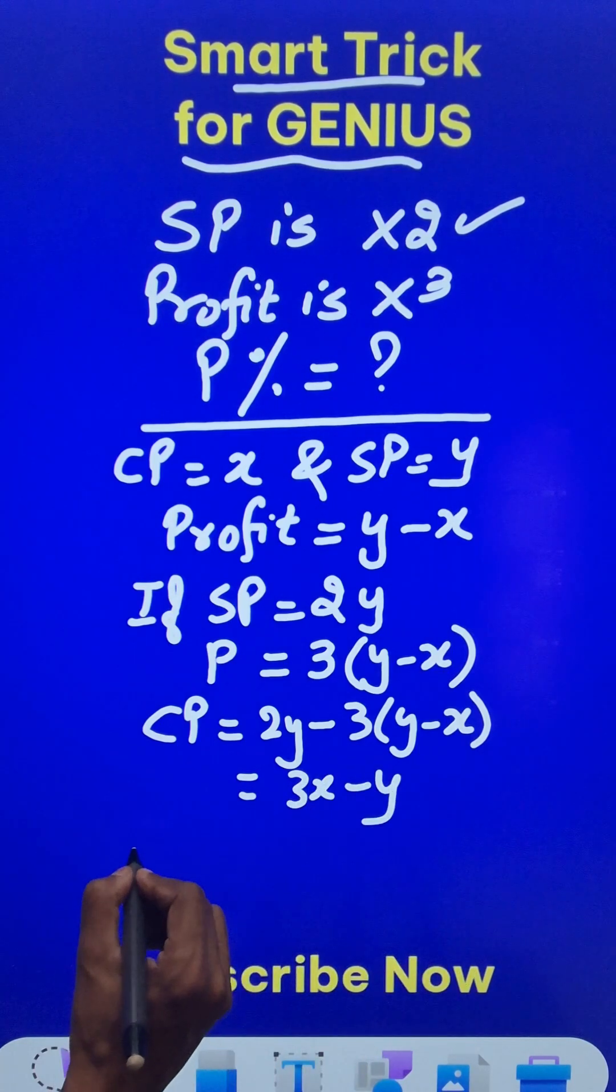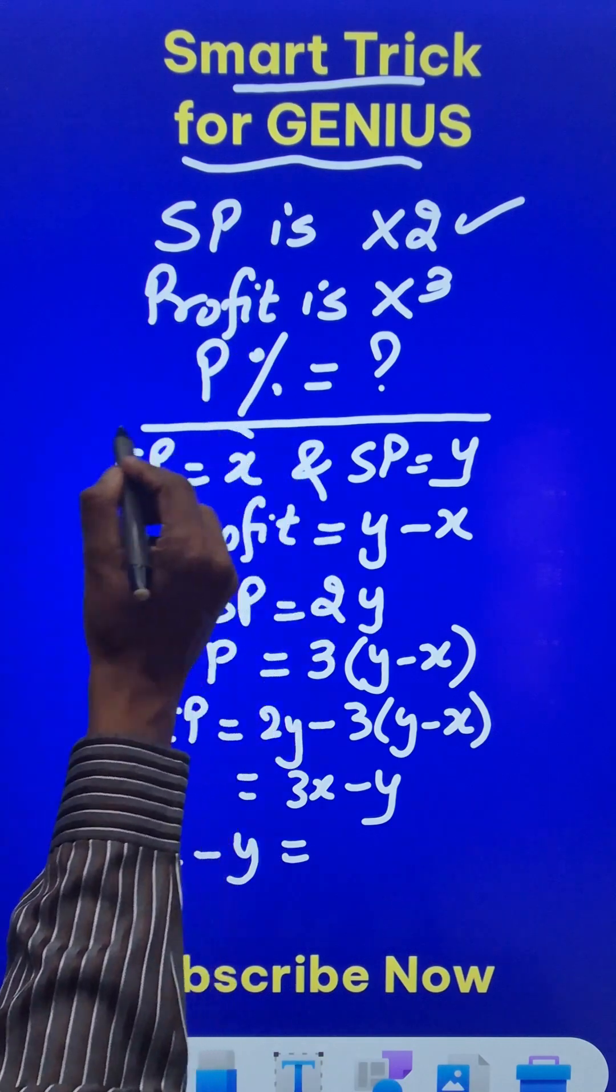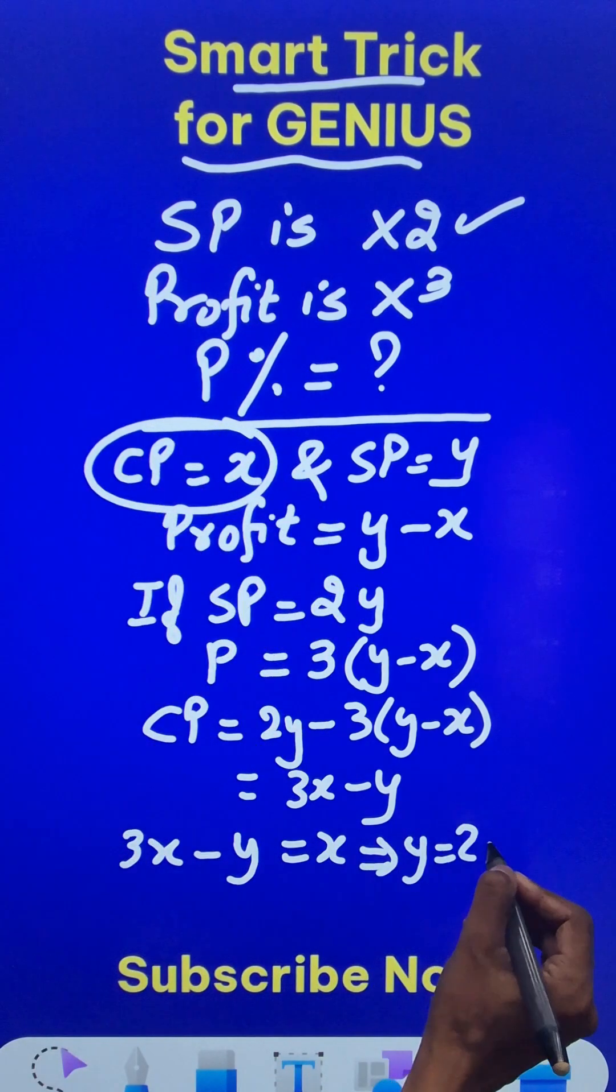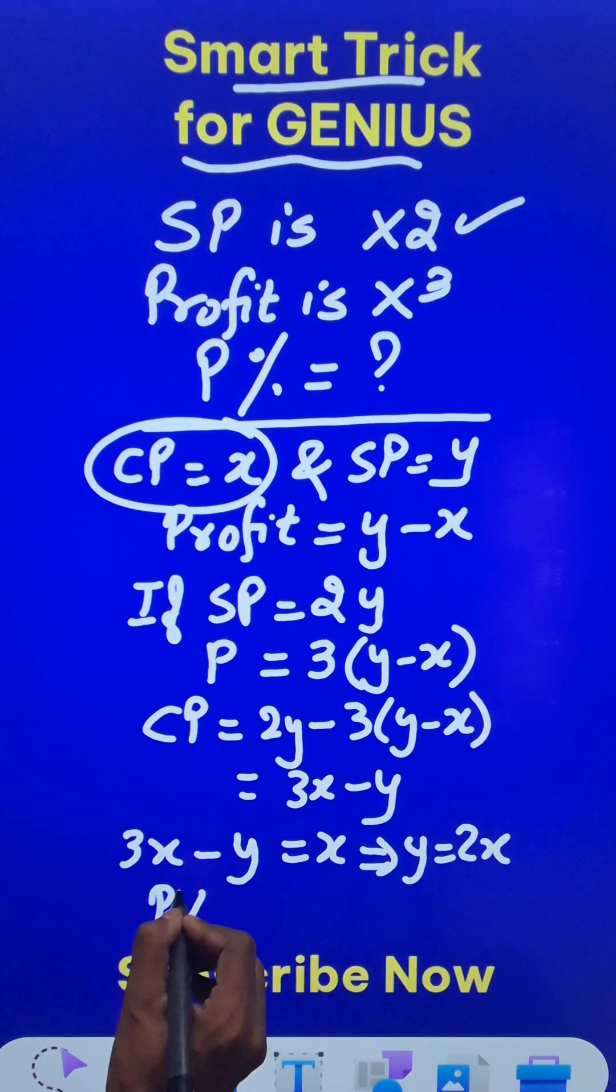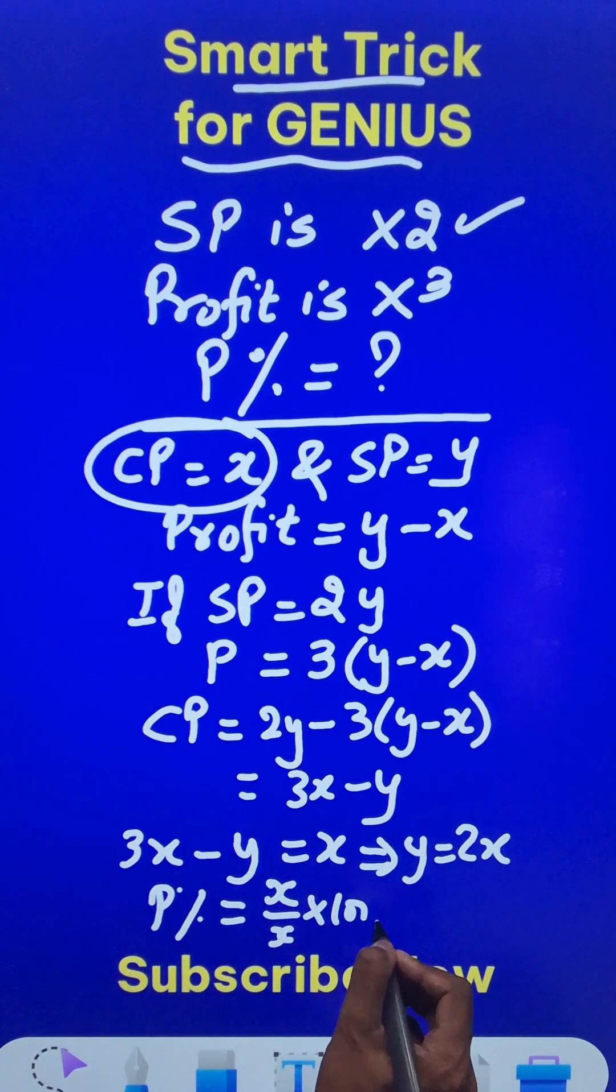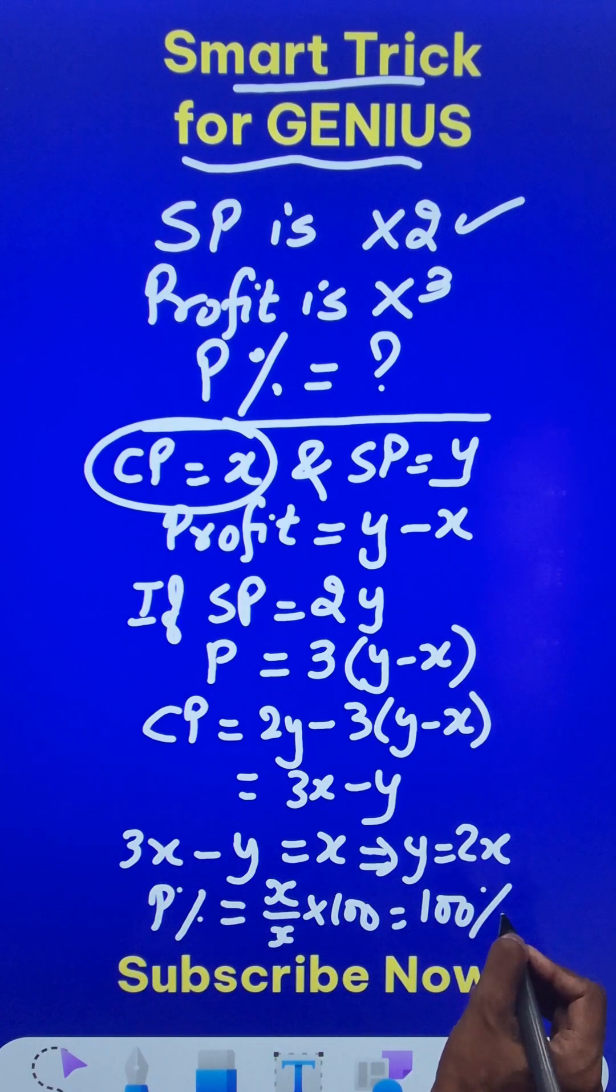Now I can find the profit percent because the cost price 3X minus Y is actually equal to the original cost price X, which gives me Y equals 2X. Therefore, the profit percent will be profit upon CP into 100, and that is exactly 100 percent profit.